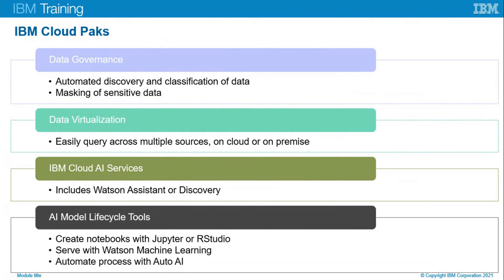The IBM Cloud Pack for Data has a single platform integrating data management, data governance, and analysis, including both IBM and open source databases. It provides data governance for automation of discovery and classification, masking of sensitive data, and data virtualization for easy querying across multiple sources on cloud or on-premise. IBM Cloud AI services include Watson Assistant and Discovery. AI model lifecycle tools allow creating notebooks with Jupyter or RStudio, serving with Watson Machine Learning, and automating processes with AutoAI.